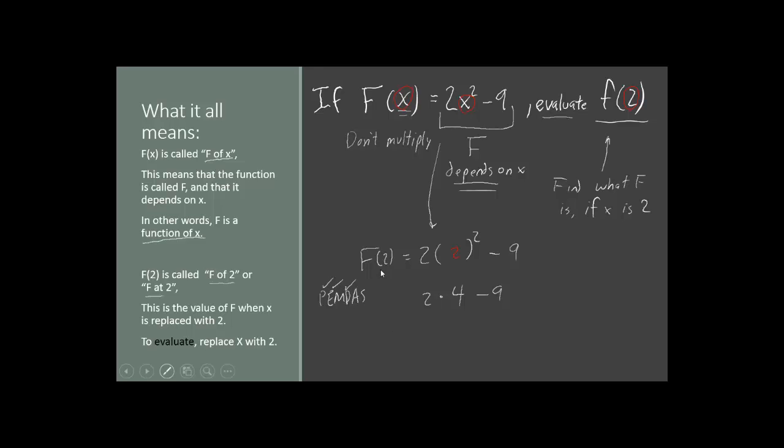We now have multiplication and division. Our multiplication is 2 times 4. That's 8. Still minus 9. Then we do additions or subtractions. All we have left is 8 minus 9. And that's equal to -1. So what we can say is f at 2 equals -1.